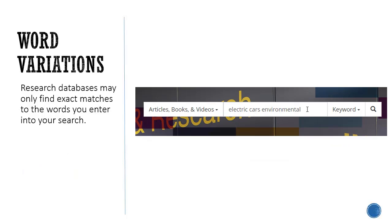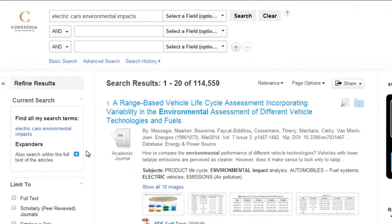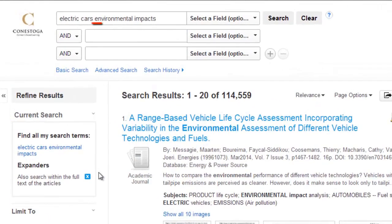In contrast, research databases may only find exact matches to the words you enter into your search. Here, only articles containing the word environmental are found.